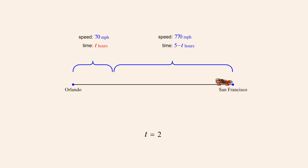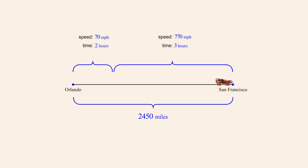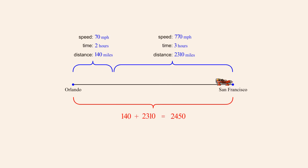Since T represents the amount of time traveling at 70 miles per hour, we know that the first leg of the trip took 2 hours. The second leg took 5 minus 2, or 3 hours. We can check these results by multiplying speed times travel time for each leg. The distance during the first leg is 70 times 2, or 140 miles. The distance during the second leg is 770 times 3, or 2,310 miles. Since the sum of these distances equals 2,450 miles, we know that our calculations are correct.